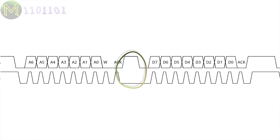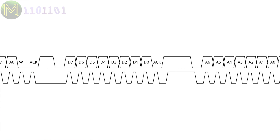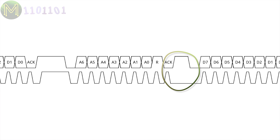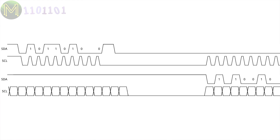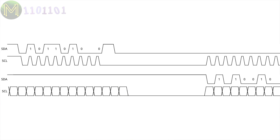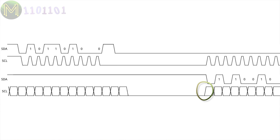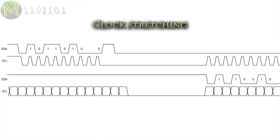Masters can actually claim the bus by not sending a stop sequence, but instead continuing on talking to as many slaves as it wants to. When a slave is sending data to the master, it is the master that controls the clock. But sometimes the slave isn't ready to send data back to the master. If this happens, the slave can pull down the SCL line, at which point the master will detect this change and will not take any action until the slave releases SCL. This is called clock stretching, and is a primitive form of flow control.